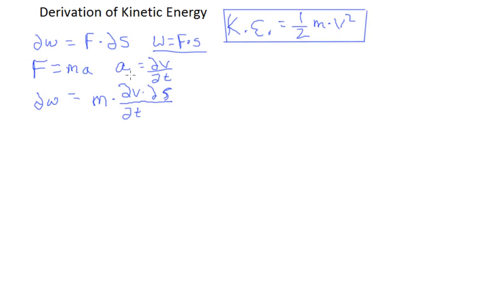Then we're going to note here that ds/dt, which is this pair right here, ds/dt happens to be equal to velocity. That is, a change in distance per unit time is the definition of velocity. So then I can write down here, dw is equal to mass times v times dv.